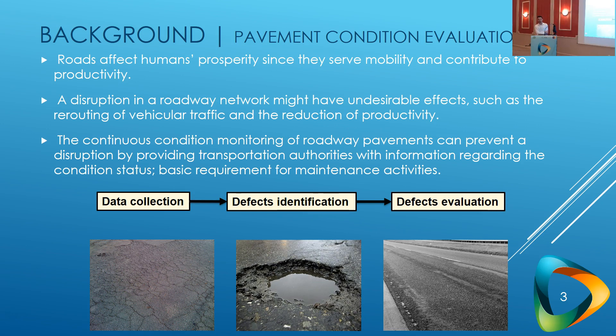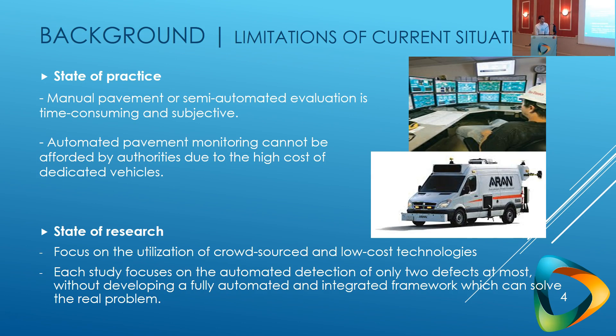Usually this process has three main stages: data collection, defects identification, and defects evaluation. Transportation authorities detect specific types of defects such as cracking, potholes, or raveling. This process is usually conducted manually by trained raters, but it is time-consuming and subjective since it depends on the experience of the raters. When automated, it is very expensive since dedicated vehicles have a very high cost to operate, so transportation authorities cannot use them for the whole network.